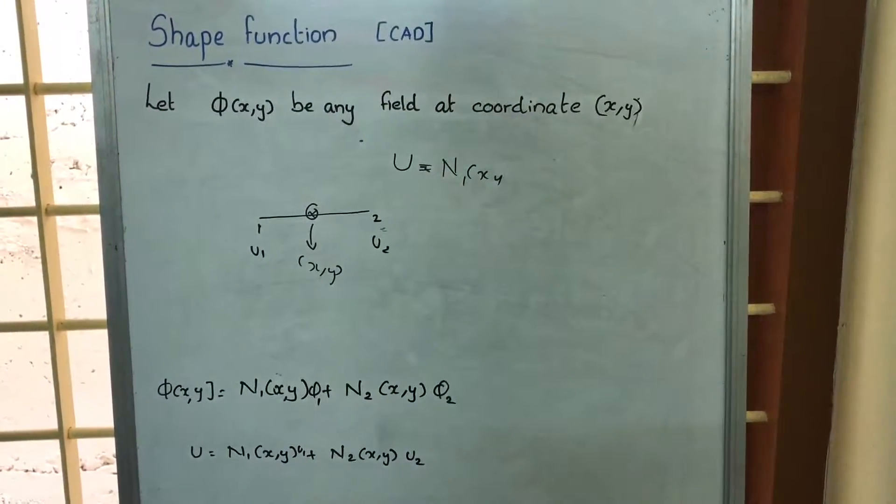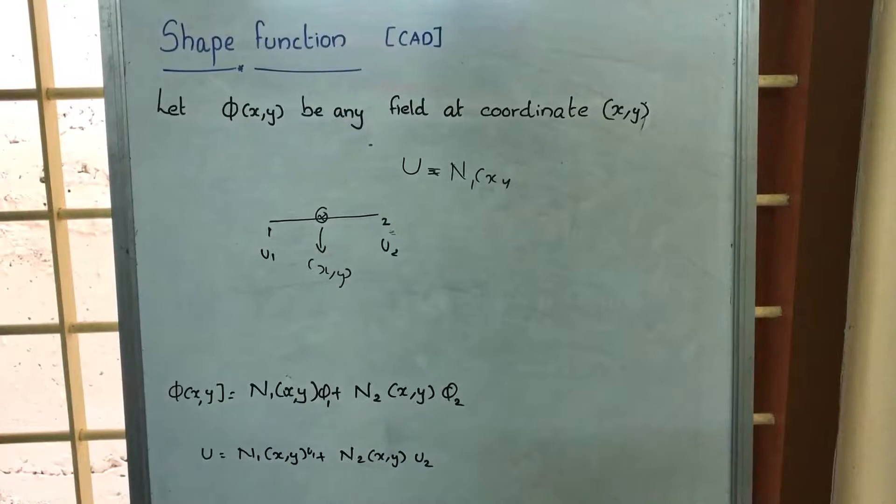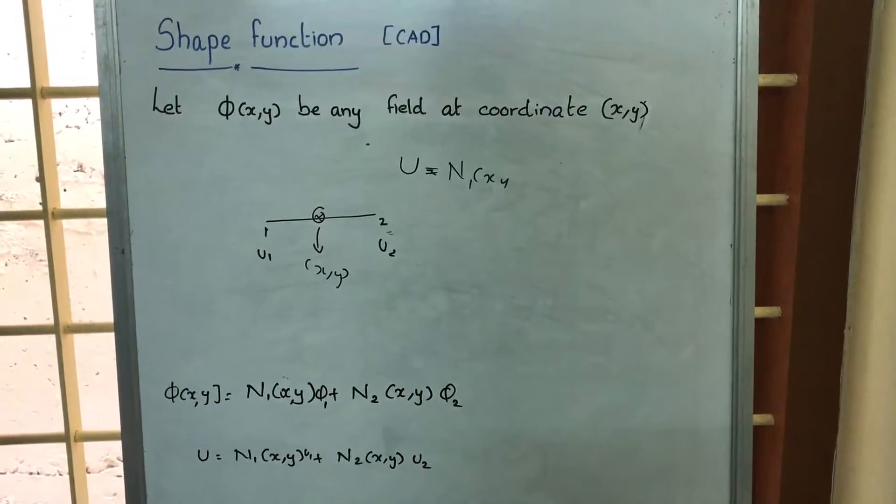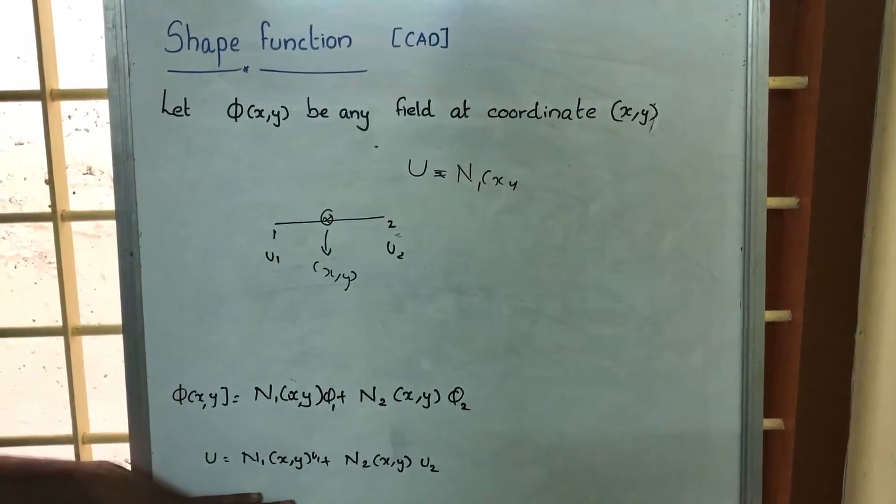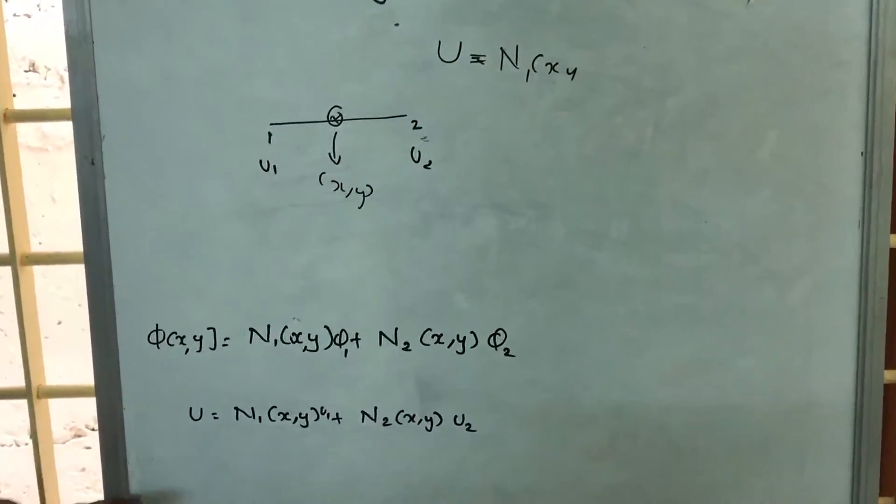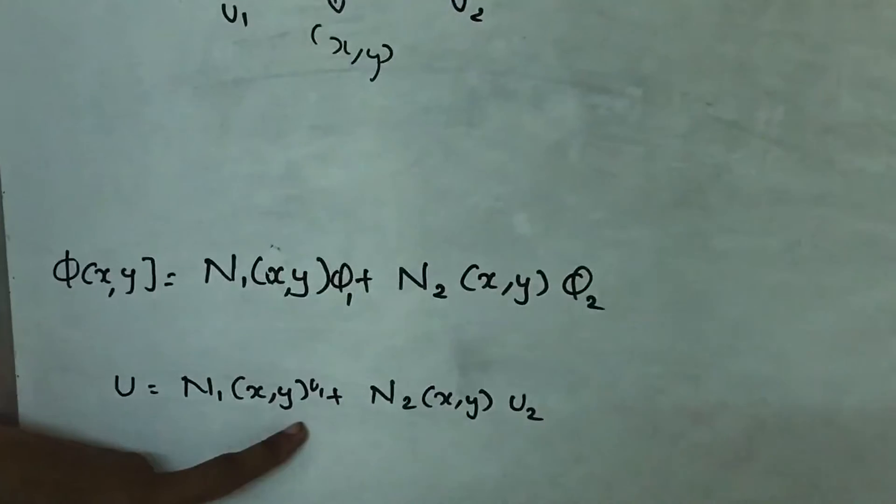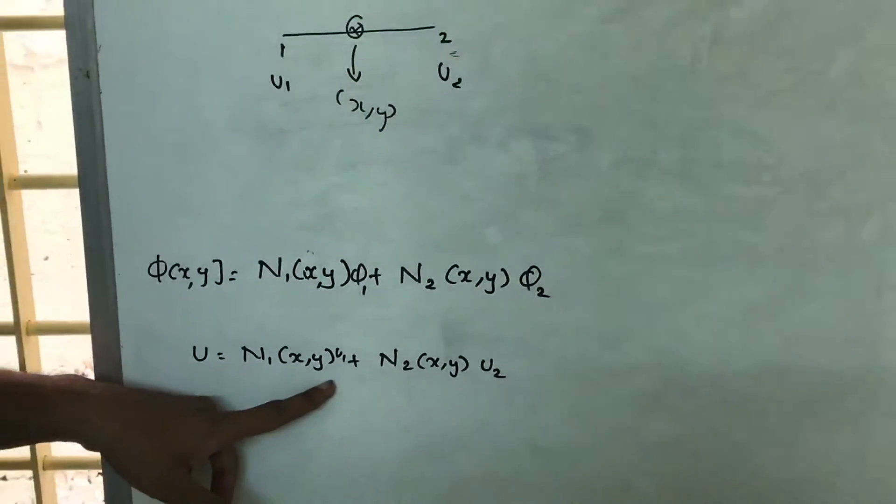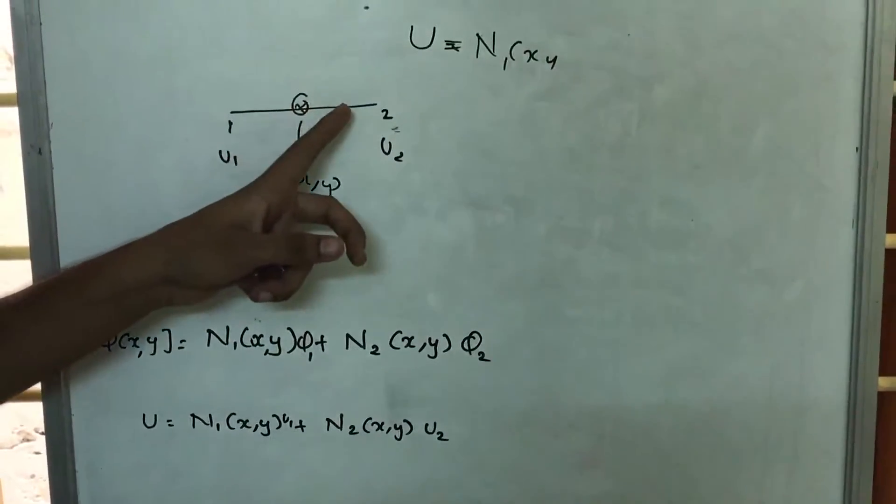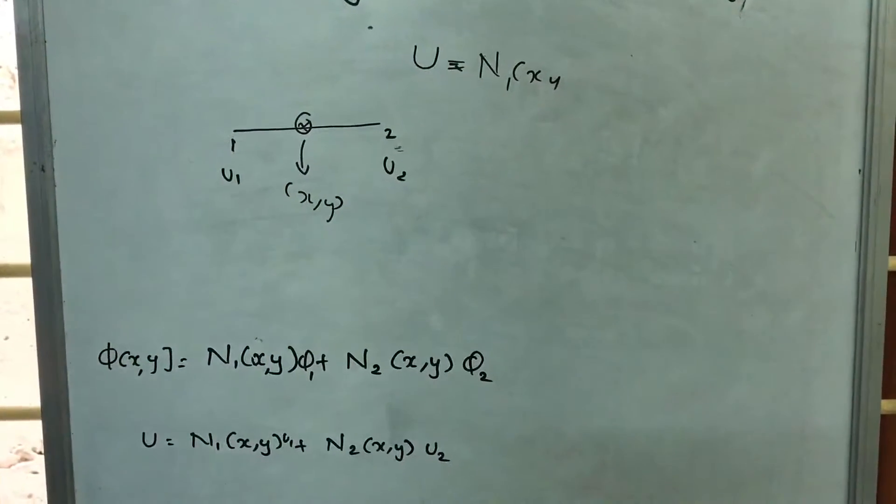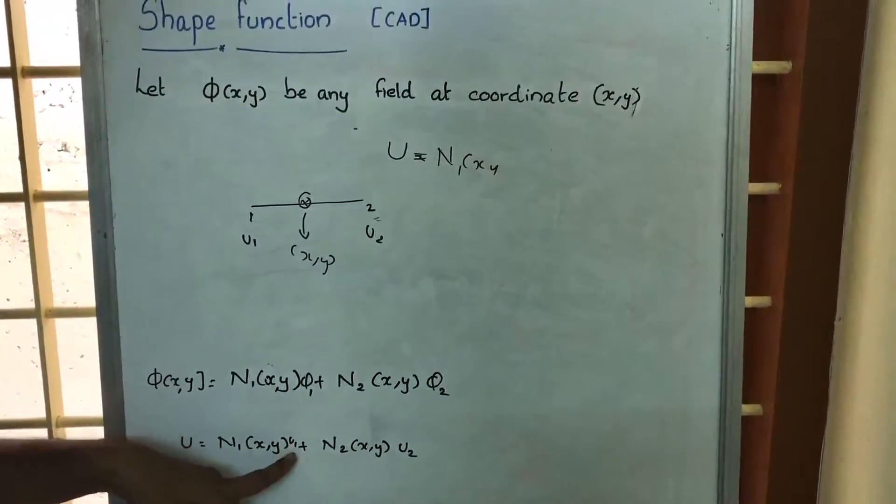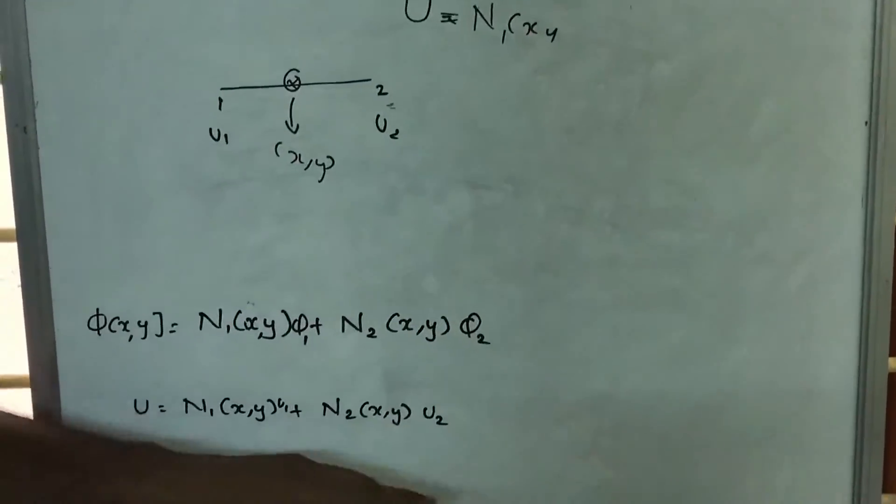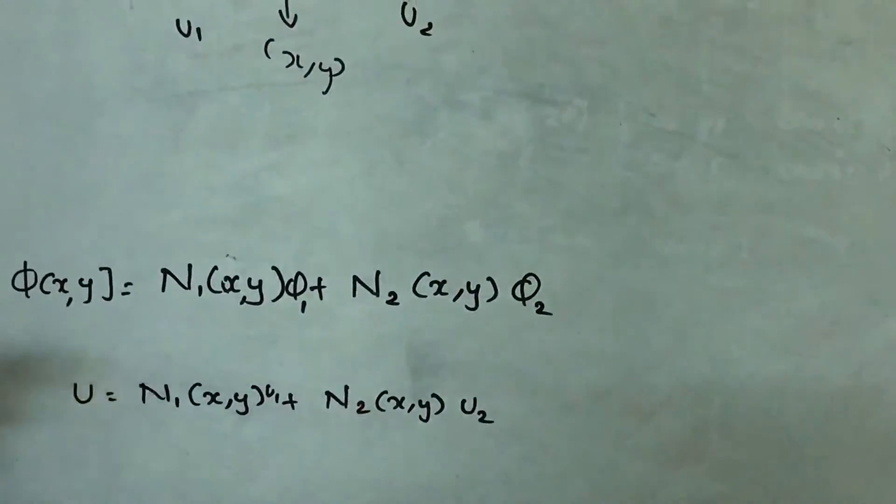So the peculiarity of this function is, in subsequent video we will be explaining this one. So here we are having a displacement u, and if we are supplying this x and y, we are able to find displacement at any point in between these two nodes. But the condition is we should know this u1, u2, and also we should have this N1 and N2 functions.